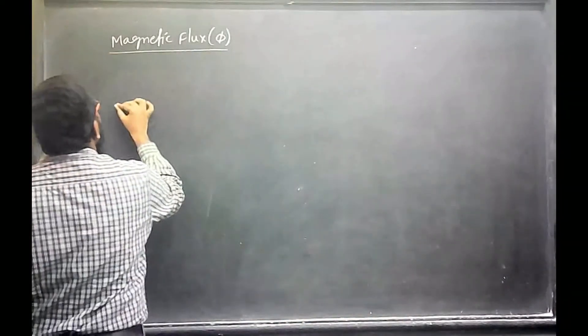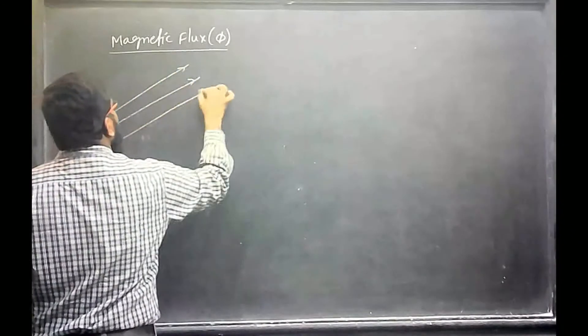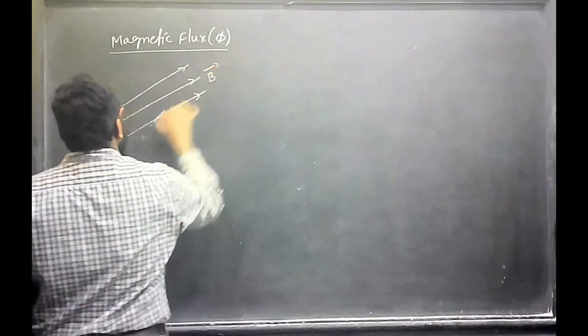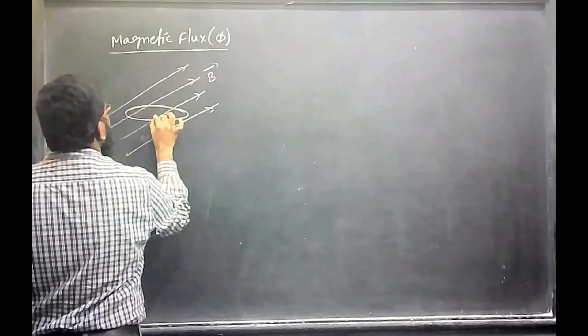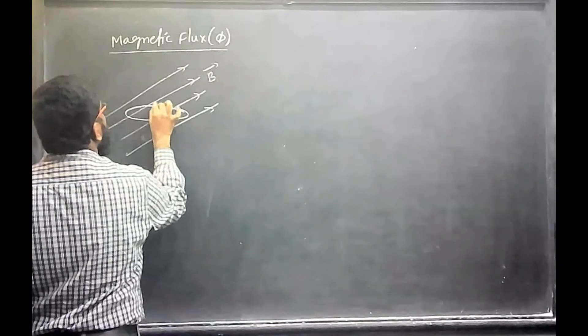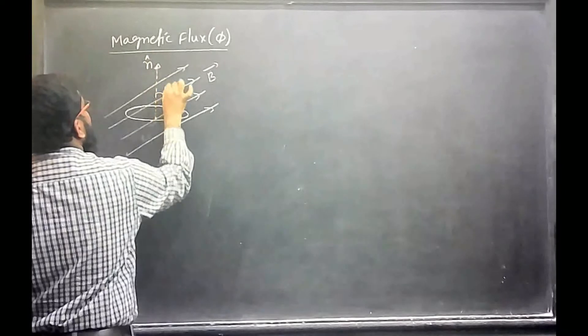Let us say in a certain region the magnetic field will be like this. It may be uniform magnetic field. Let us have placed a loop here. Let us say unit normal to this will be like this, this is normal area vector. Let us say angle between them is theta.